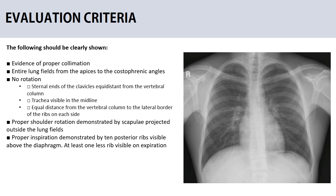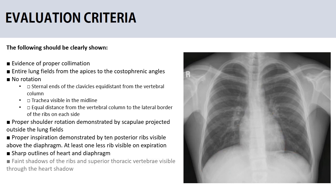For proper inspiration, to determine the degree of inspiration you should be able to identify and count the ribs. The first and second ribs are more difficult to locate, and as a general rule for average adult patients, at least 10 posterior ribs should be visible in the lung area above the diaphragm. Exceptions are patients with pulmonary diseases and trauma who may not be able to inspire deeply. Additionally, sharp outlines of the heart and diaphragm, faint shadows of the ribs, superior thoracic vertebrae visible through the heart shadow, and lung markings visible from the hilum to the periphery of the lung all demonstrate that proper exposure factors were chosen.